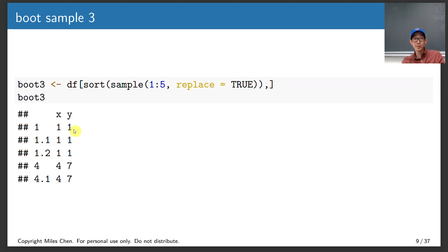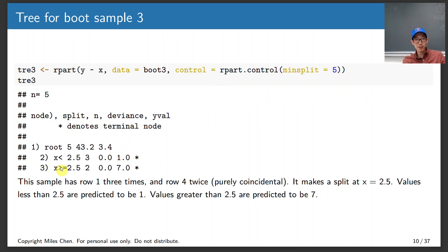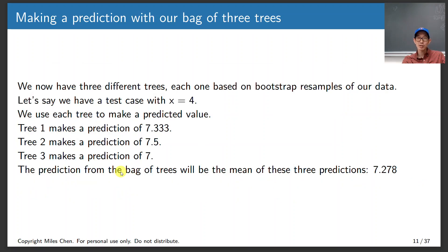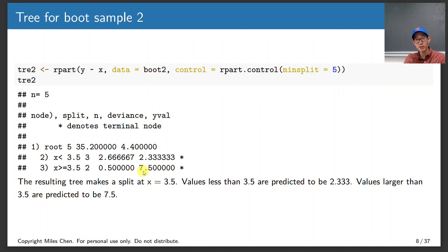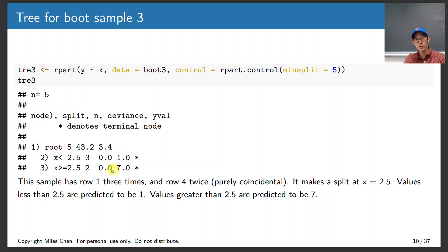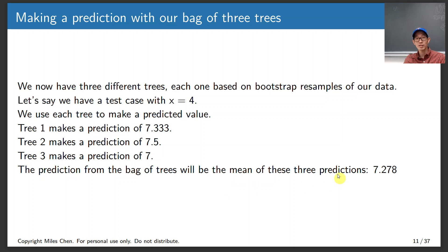On the third resample, by coincidence I got 1, 1, 1, 4, 4 — sometimes when you resample you end up with a bunch of the same observation. Here we split between 1 and 4 at 2.5. If less than 2.5, predict 1; if greater, predict 7. So if we get a new observation at X=4, the first tree predicts 7.33, the second predicts 7.5, and the third predicts 7.0. The average of all of these is 7.278, and that's what you get with bagging.